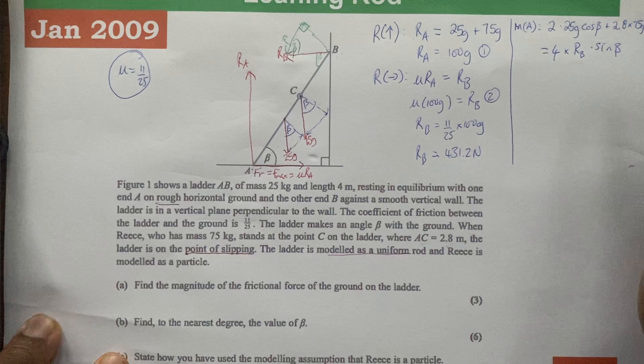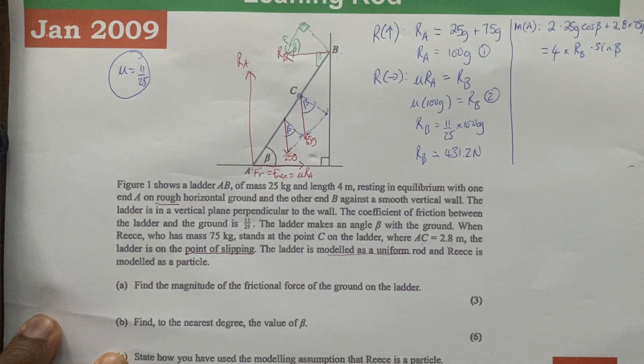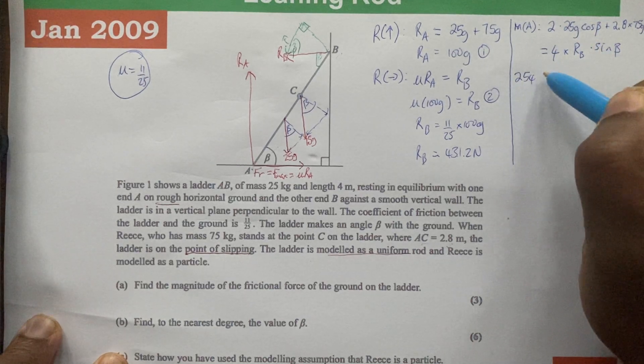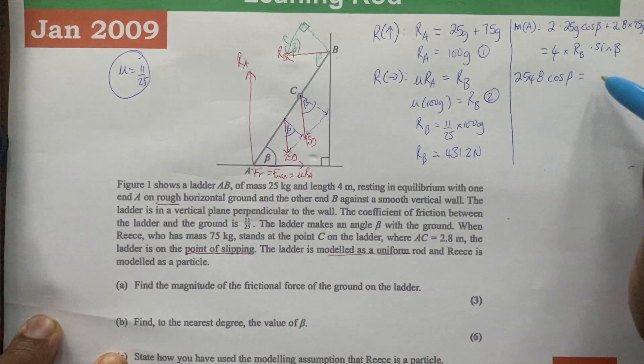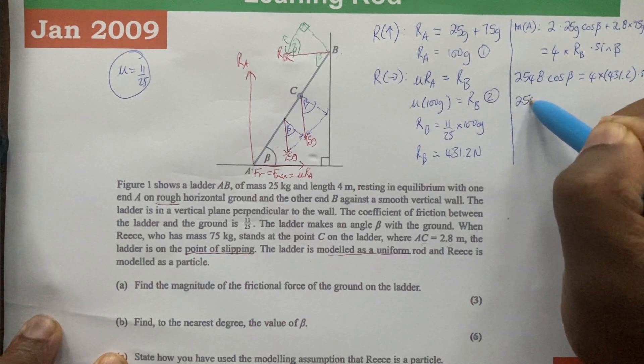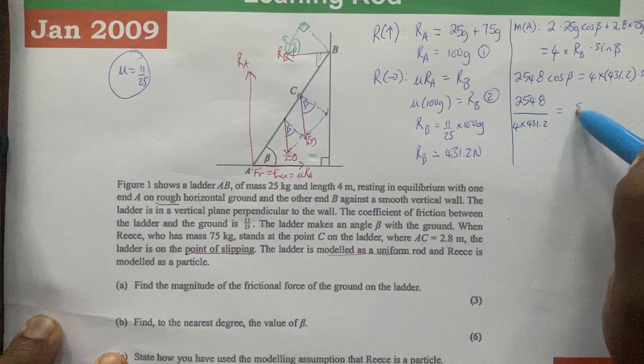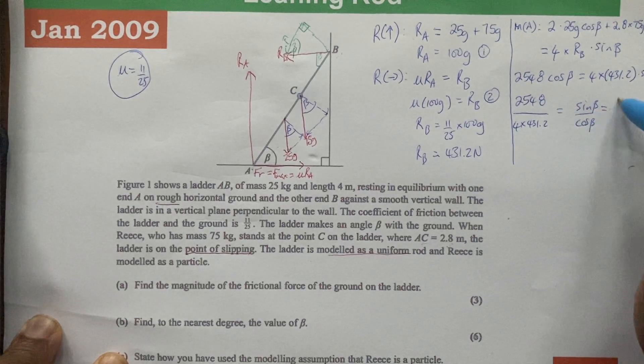If we simplify, we're going to add 2 times 25G plus 2.8 times 75G. That gives us 2,548 cos beta equals 4 times RB times sin beta, where RB is 431.2. So we have 2,548 over 4 times 431.2 equals sin beta divided by cos beta, which is equal to tan beta.